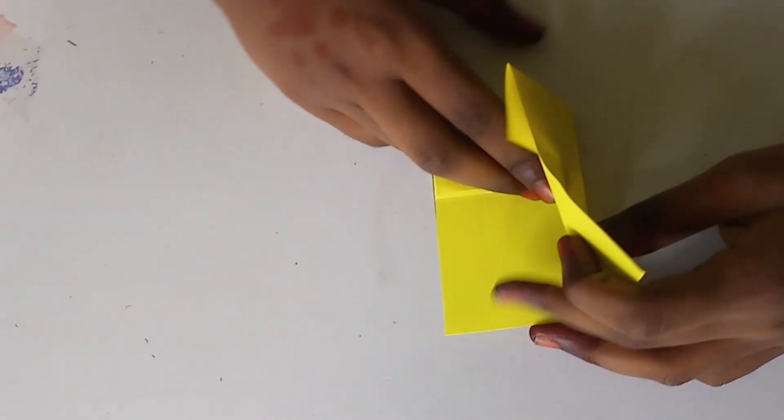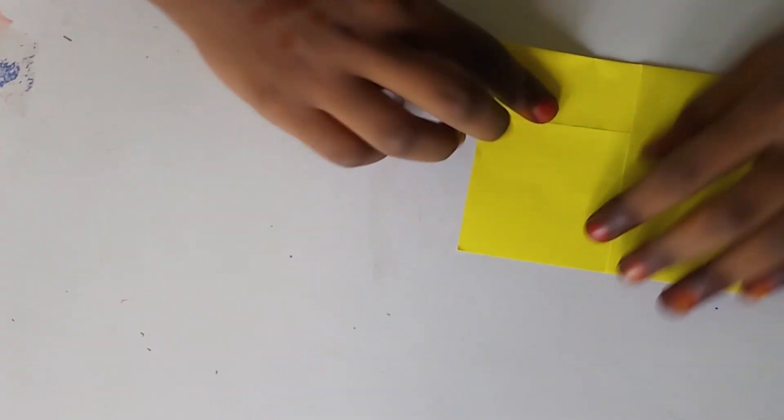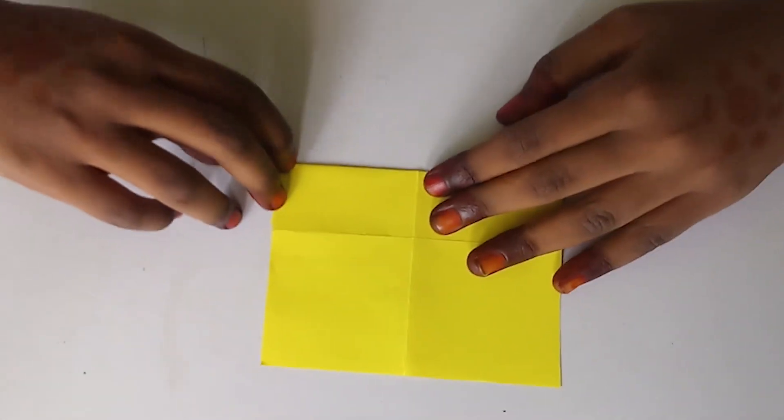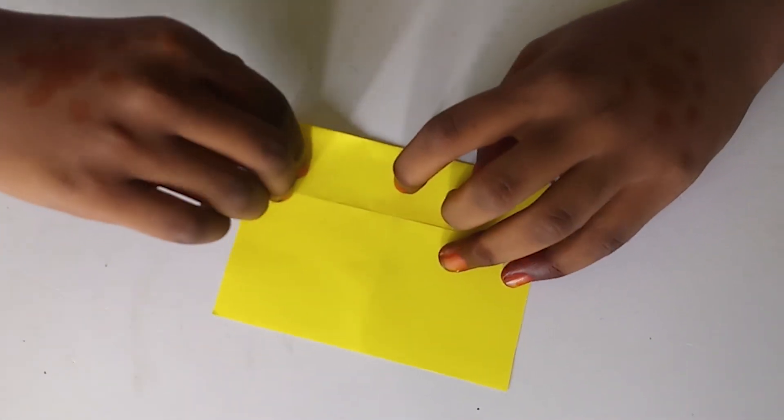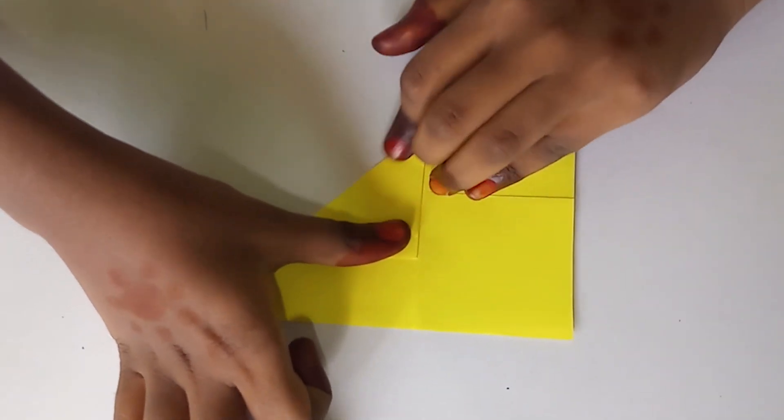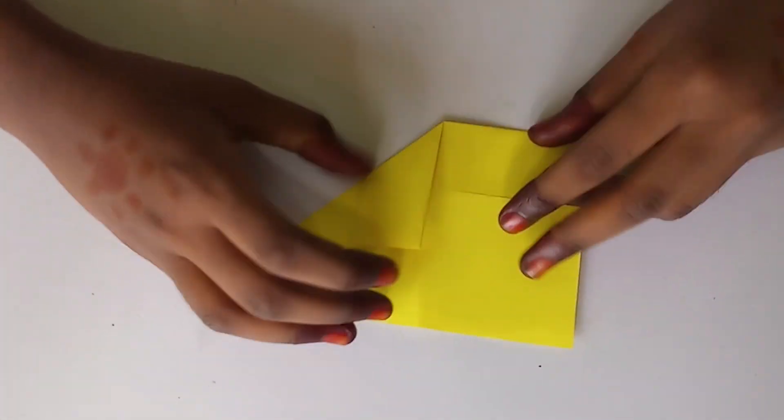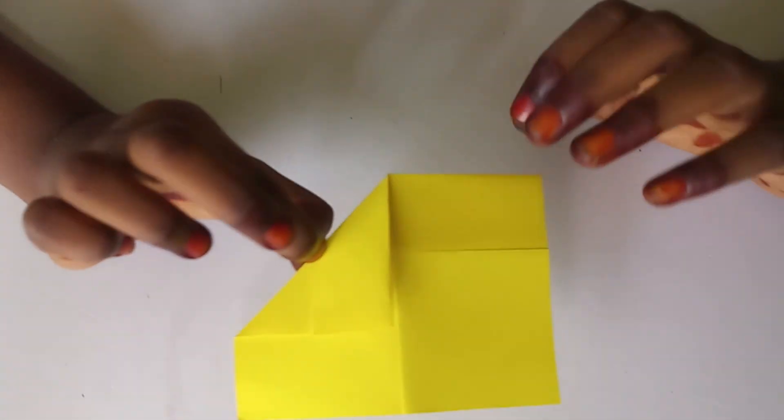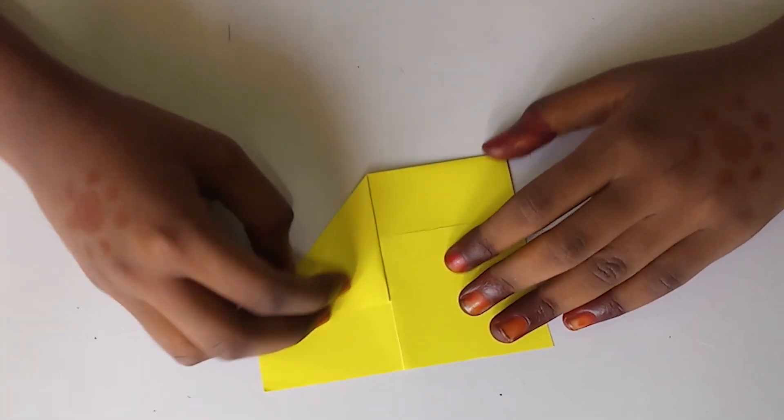Unfold it. Turn the paper. Take this corner to the center line. Like this. Do it on the opposite side also.